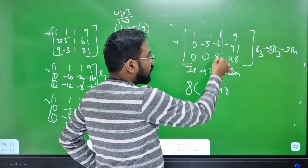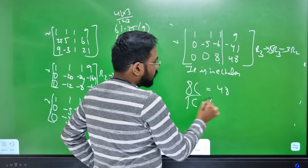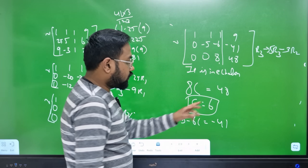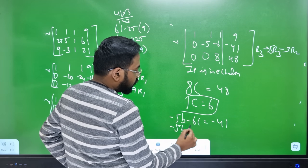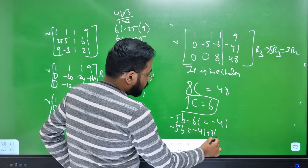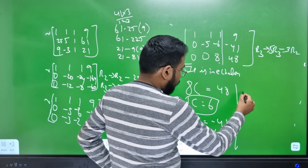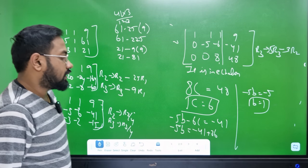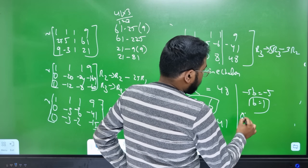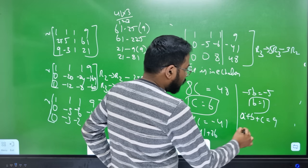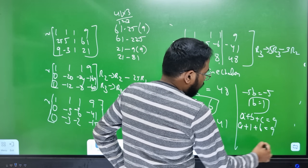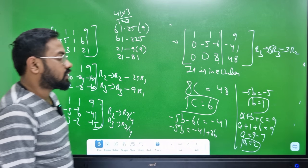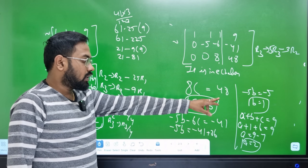From back substitution: b equals 48 divided by 48, so b equals 1, and c equals 6. Then a plus 5b plus 6c equals minus 41, giving a plus 5 plus 36 equals 41, so a equals minus 5 times b — wait, minus 5b equals minus 5, so b equals 1. And a plus b plus c equals 9: 6 plus 1 is 7, 9 minus 7 is 2. So a equals 2, b equals 1, c equals 6.